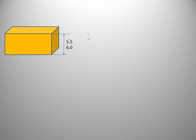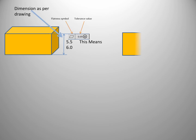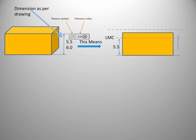I think everybody can understand the concept of maximum material condition and minimum material condition. Next, let's look at how we can apply this practically. Consider a component with a tolerance of 5.5 to 6 and a GD&T tolerance — flatness tolerance — of 0.5. For this component, the least material condition is 5.5 and the maximum material condition is 6.